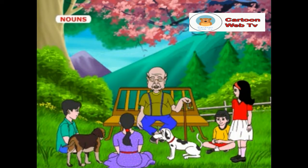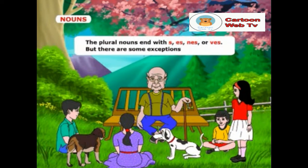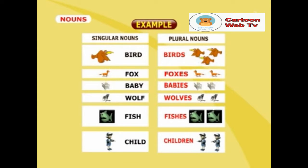Jenny, do you know that the nouns are either singular or plural? Yes, Grandpa. The singular nouns refer to one person or a thing, and the plural nouns refer to more than one person or a thing. Normally, the plural nouns end with S, ES, NES or VES. But there are some exceptions. The nouns at your left are singular nouns which refer to either one person, one animal or a thing. And the nouns at your right are plural nouns which refer to more than one person, animal or a thing.